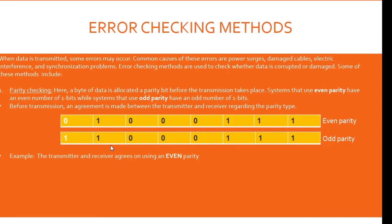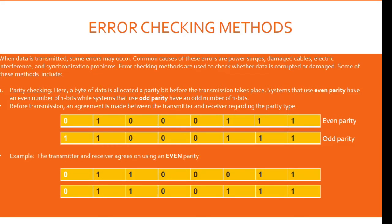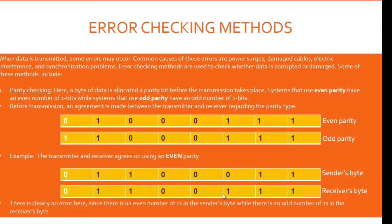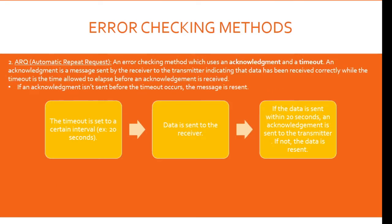Note: a byte is basically 8 bits. For example, if the transmitter and receiver agree on using even parity, there is clearly an error if there is an even number of ones in the transmitter's byte while there is an odd number of ones in the receiver's byte. Number two, ARQ, also known as Automatic Repeat Request — it is an error checking method which uses an acknowledgement and a timeout. An acknowledgement is a message sent by the receiver to the transmitter indicating data has been received correctly, while the timeout is the time allowed to elapse before an acknowledgement is received. If an acknowledgement isn't sent before the timeout occurs, the message is resent.